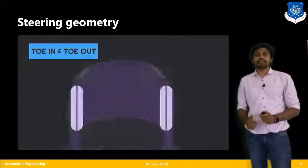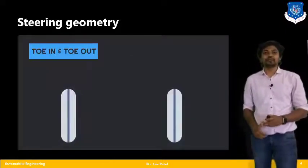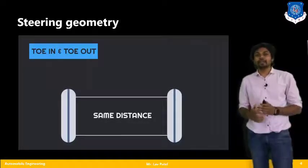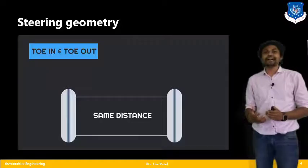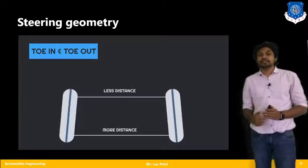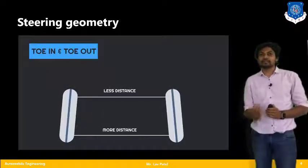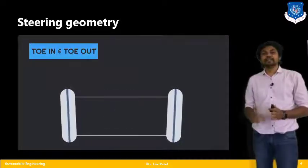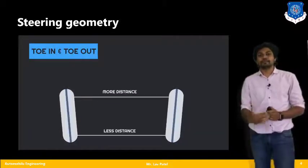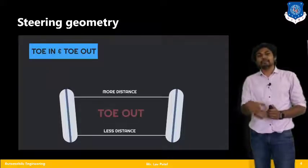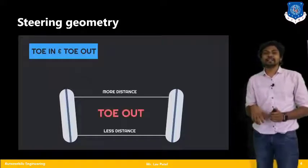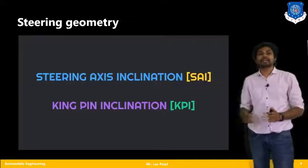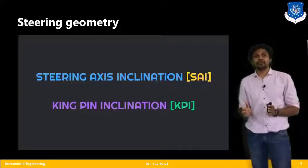The third topic is toe-in and toe-out. We view the car from the top and check the front tires by measuring the distance from the front and rear portions of each individual tire. The difference in those distances gives us the toe-in angle and toe-out angle.